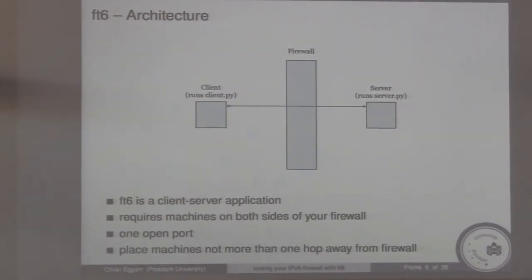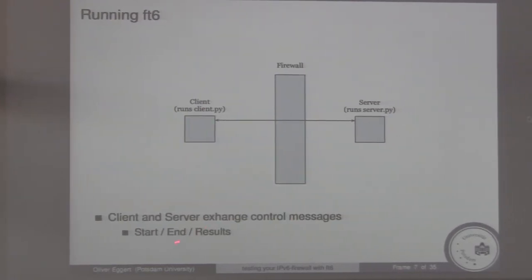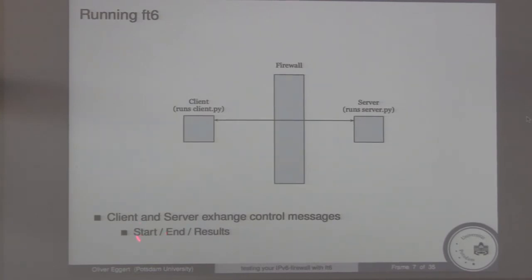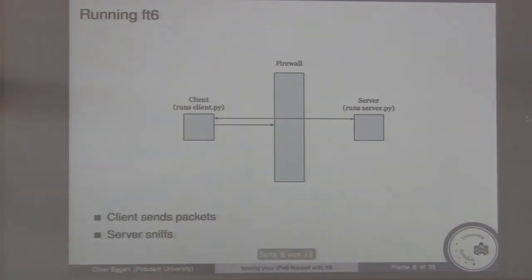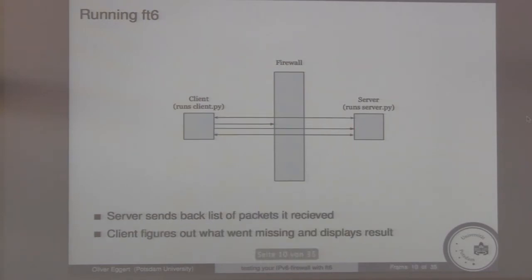The program runs as a client-server architecture. You have your firewall in the middle and place two machines, one on either side. One runs the server, one runs the client. You need one open port through which they can communicate and exchange status messages. The client sends packets, the server sniffs on the other side. Some packets make it through the firewall and some are blocked. After the test, the server sends back a list of packets it received, and the client displays results — missing packets are interpreted as being blocked by the firewall.